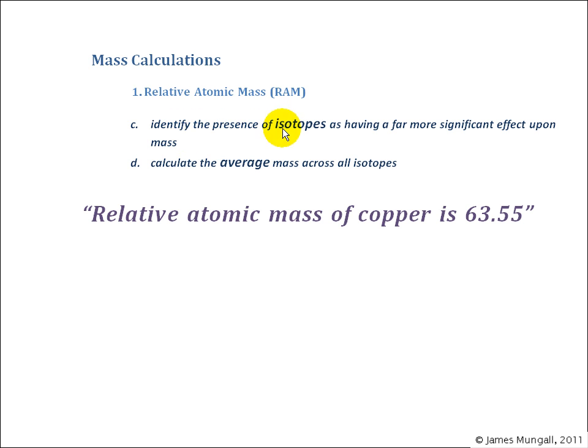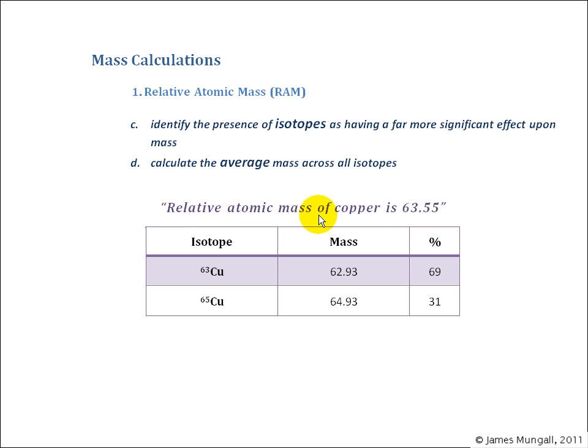So we're going on now to identify the presence of isotopes as having a far more significant effect upon mass and then calculate the average mass across all isotopes. We just said the relative atomic mass of copper is 63.55. If we were to take some copper and put it in a mass spectrometer then the mass spectrometer would give a readout which would give the mass of the two isotopes, the 63 and the 65 copper, and then their relative abundances.